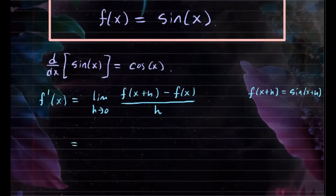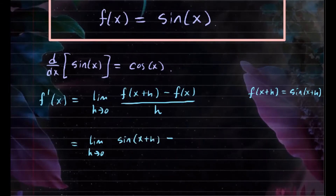This is equal to the limit as h approaches 0 of f of x plus h — that's simply sine of x plus h — minus f of x, which is sine of x, all over h.